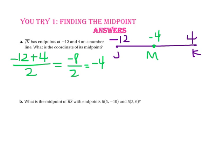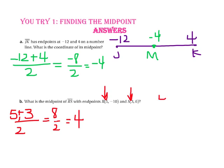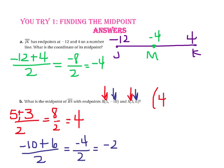For part B, we are looking for the midpoint of segment RS with endpoints R at (5, negative 10) and S at (3, 6). Starting with the x-coordinates, 5 and 3: the average is 5 plus 3 divided by 2, which is 8 divided by 2, or 4. Now for the y-coordinates, negative 10 and 6: the average is negative 10 plus 6 divided by 2. Negative 10 plus 6 is negative 4, divided by 2 is negative 2. So the midpoint has coordinates (4, negative 2).